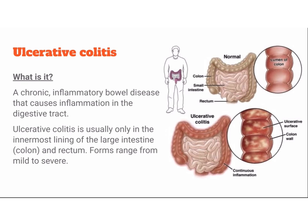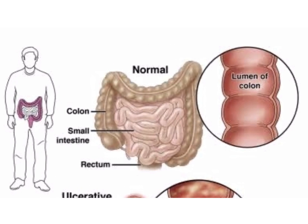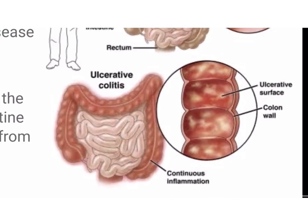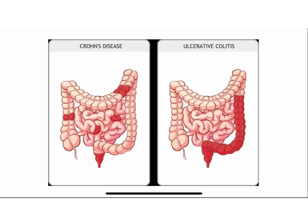Ulcerative colitis is a chronic inflammatory bowel disease that causes inflammation in the digestive tract. It is usually only in the innermost lining of the large intestine and rectum, and its severity ranges from mild to severe. Both Crohn's disease and ulcerative colitis are IBD, but the major difference is Crohn's disease affects the entire GI system while ulcerative colitis affects only the colon.